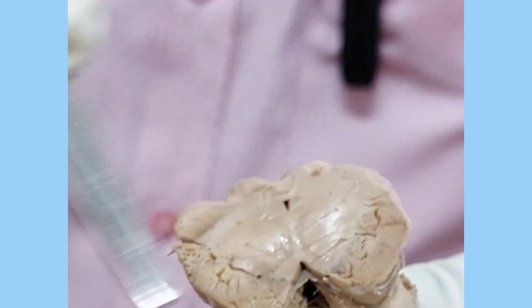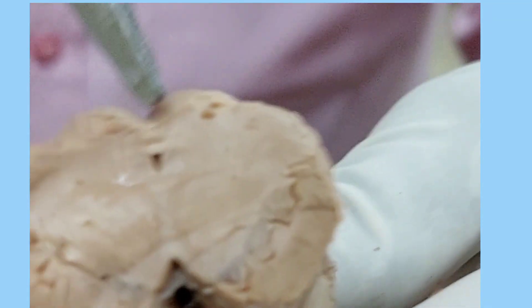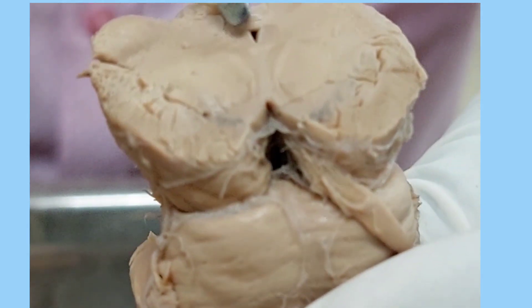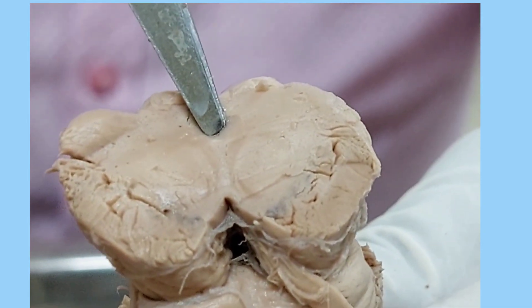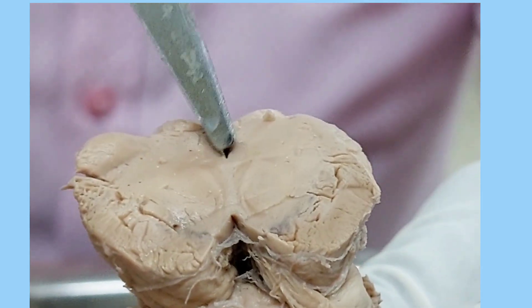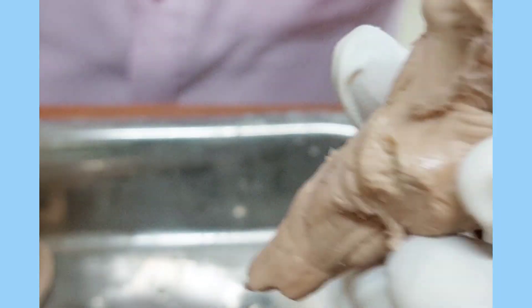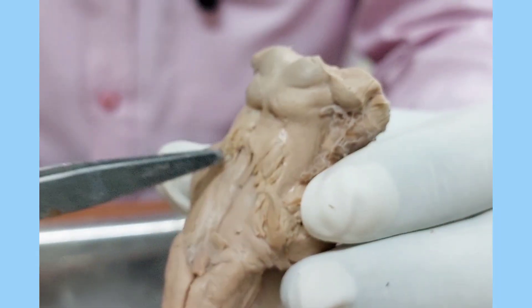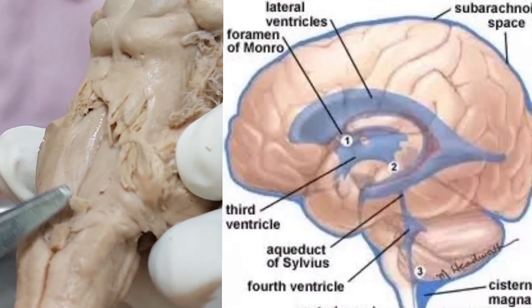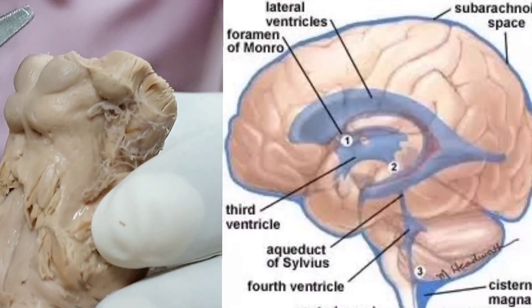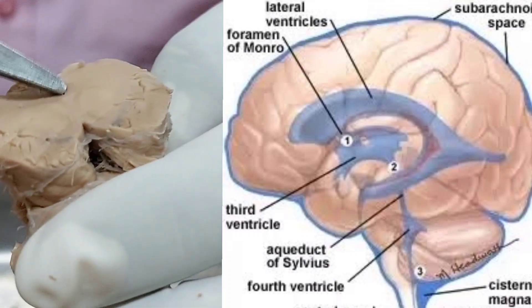In this cut section of the midbrain you can see one small opening — this is called the cerebral aqueduct, or aqueduct of Sylvius. If I trace this aqueduct of Sylvius downwards, it will reach the fourth ventricle. So the fourth ventricle is continuous above with this aqueduct of Sylvius.